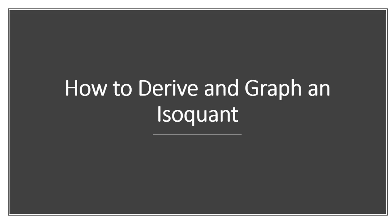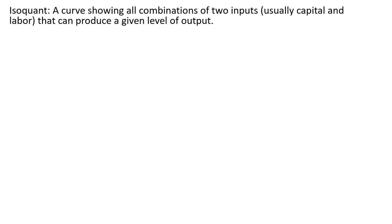Hello, in this video we're going to look at how to derive and graph an isoquant. An isoquant is a curve showing all combinations of two inputs, usually capital and labor, that can produce a given level of output.